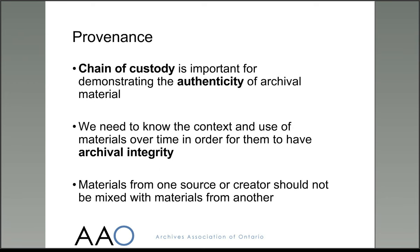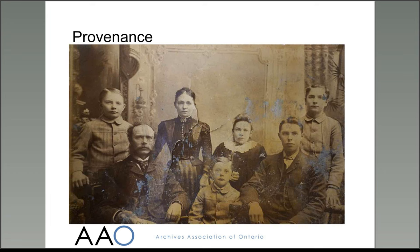In order for us to be confident about the authenticity of a particular record, we need to know that it is what it purports to be. We need to know where this document has been all its life, who created it, who has had charge of it and who has had access to it. We also need to know how this record relates to all the other records that were created by the same organisation or individual. Once a record is separated from the context of its creation or use, it loses important information about that association. Think of a stray family photograph at a flea market, and how much information has been lost when we don't know where that item came from in the first place, or who it represents.